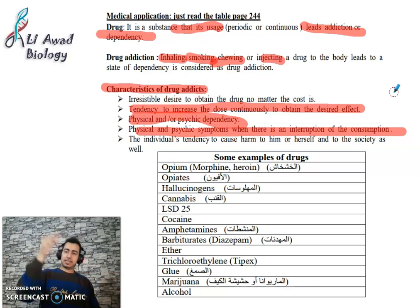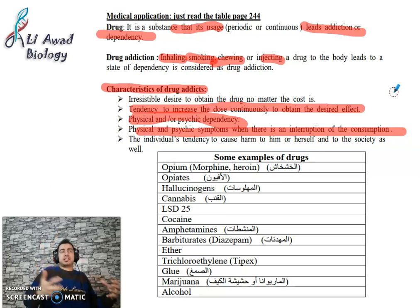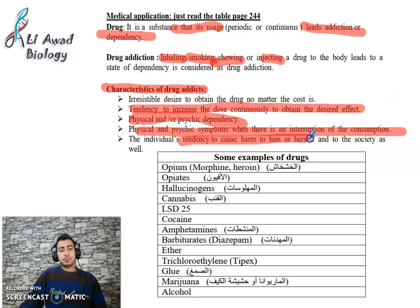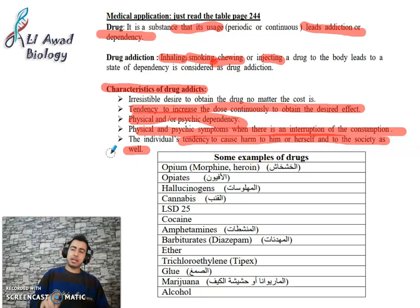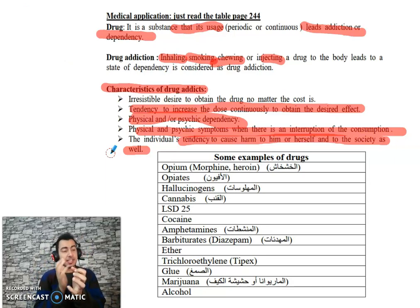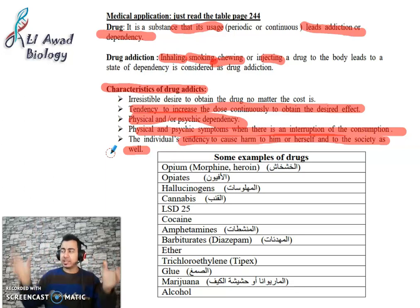When someone stops using the drug, they experience psychological and physical symptoms like pain, withdrawal, and social isolation. The individual also has a tendency to cause harm to themselves and to society. The addict's entire life becomes centered around drugs — they think drugs help them escape social pressures, but they are actually destroying themselves and spending enormous amounts.